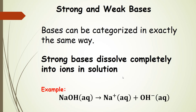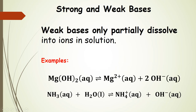We can talk about bases in exactly the same way. Strong bases dissolve completely into ions in solution — so sodium hydroxide in aqueous solution gives us sodium cations and hydroxide anions, notice the single-headed arrow. Weak bases only partially dissolve into ions in solution, analogous to weak acids. For example, magnesium hydroxide dissolved in solution only partially dissociates to give magnesium 2+ and hydroxide ions. Ammonia is another weak base, giving ammonium cations and hydroxide anions — notice the double-headed arrow in both cases.